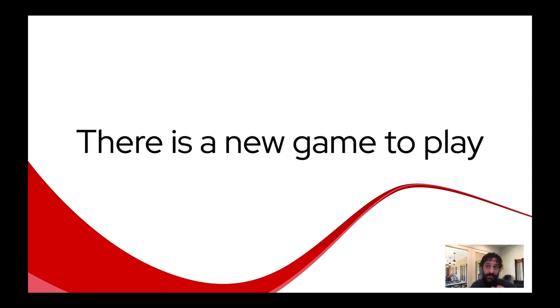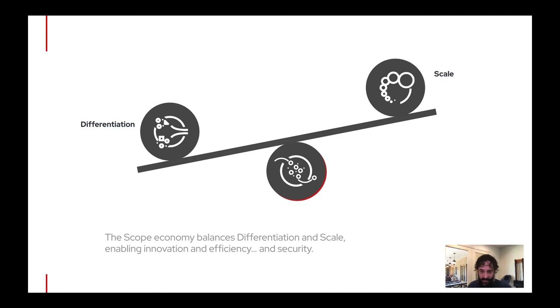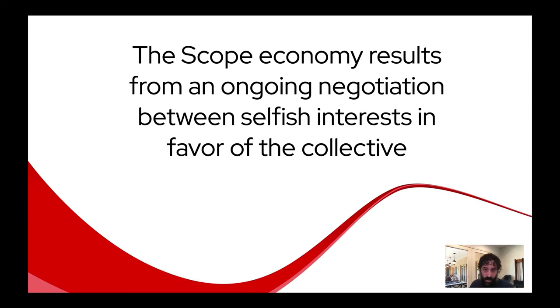There's a new way. And I'm going to start with this academic framing, hopefully get more and more concrete and hopefully more and more relevant. So this new game, and this is from James language is this scope economy. So it acts a bit like a clutch or kind of like a fulcrum that balances the differentiation in the scale economy to enable innovation and efficiency and security. And the scope economy in the best cases of this results from these ongoing negotiations, recognizing the selfish interests in favor of the collective interests.